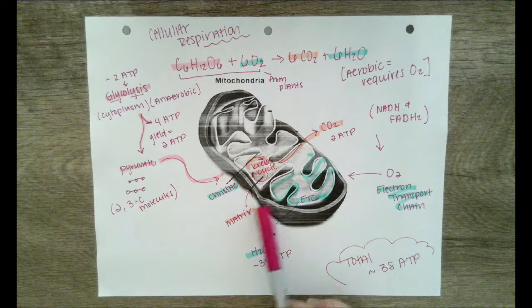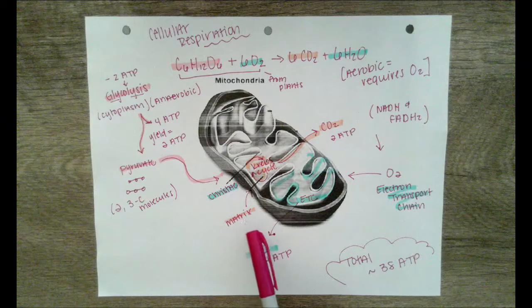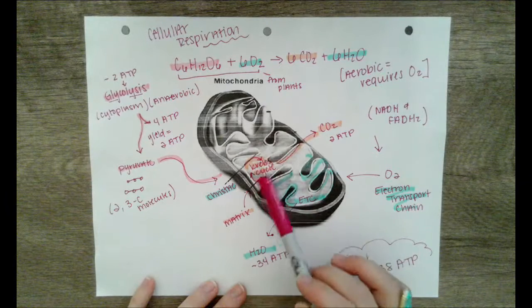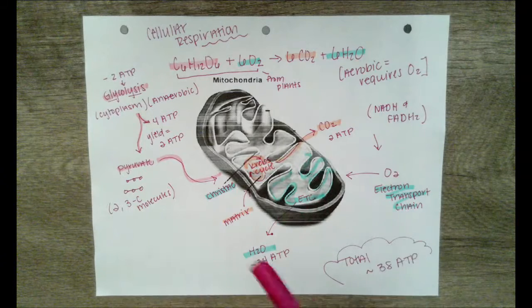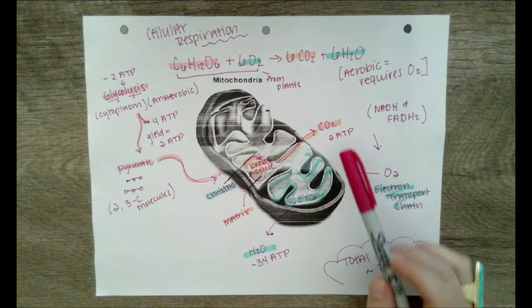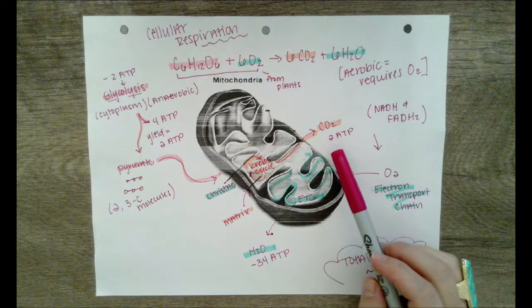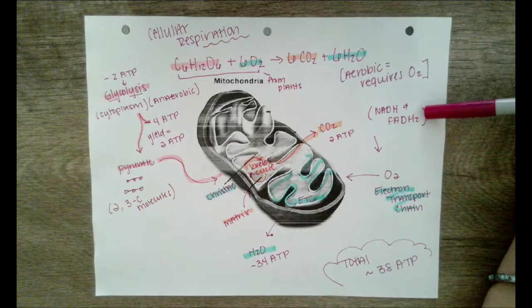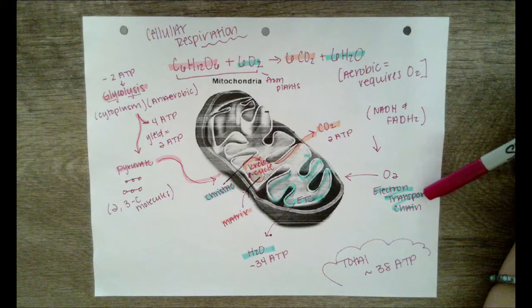Pyruvate then enters into phase two called the Krebs cycle. The Krebs cycle happens in the matrix of the mitochondria, which is like all of this space in here. The Krebs cycle is going to take the pyruvate and turn it into carbon dioxide, and it's going to yield two ATP. ATP is going to be stored in our energy storage molecules and then used later in the electron transport chain.